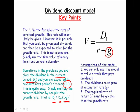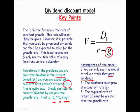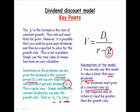What are the assumptions of the model? These are very important. You can only use this model to value a stock that pays dividends. That's why it's called a dividend discount model. Second, the dividends must grow at a constant rate in order to use this model. And finally, the required rate of return, R, must be greater than the growth rate.